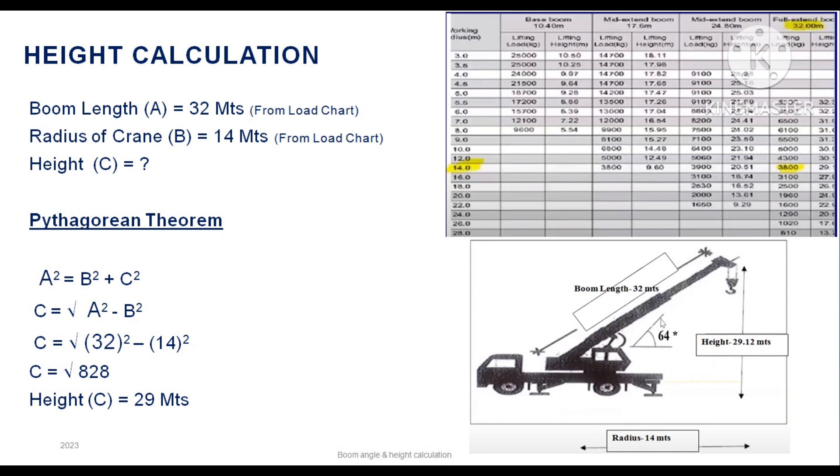So here, A denotes boom length, B denotes the height, and C denotes the radius. A² = B² + C², so C = √(A² - B²). C equals the square root of boom length squared minus the radius squared. So we are getting around 29 meters.